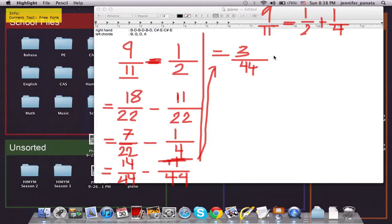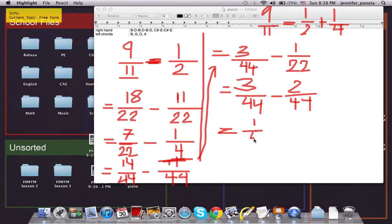The largest unit fraction that's still smaller than 3 over 44 is 1 over 22, and so we again make the denominators the same. That would be 3 over 44 and 1 over 22. So subtract that, and we'll end up with 1 over 44.